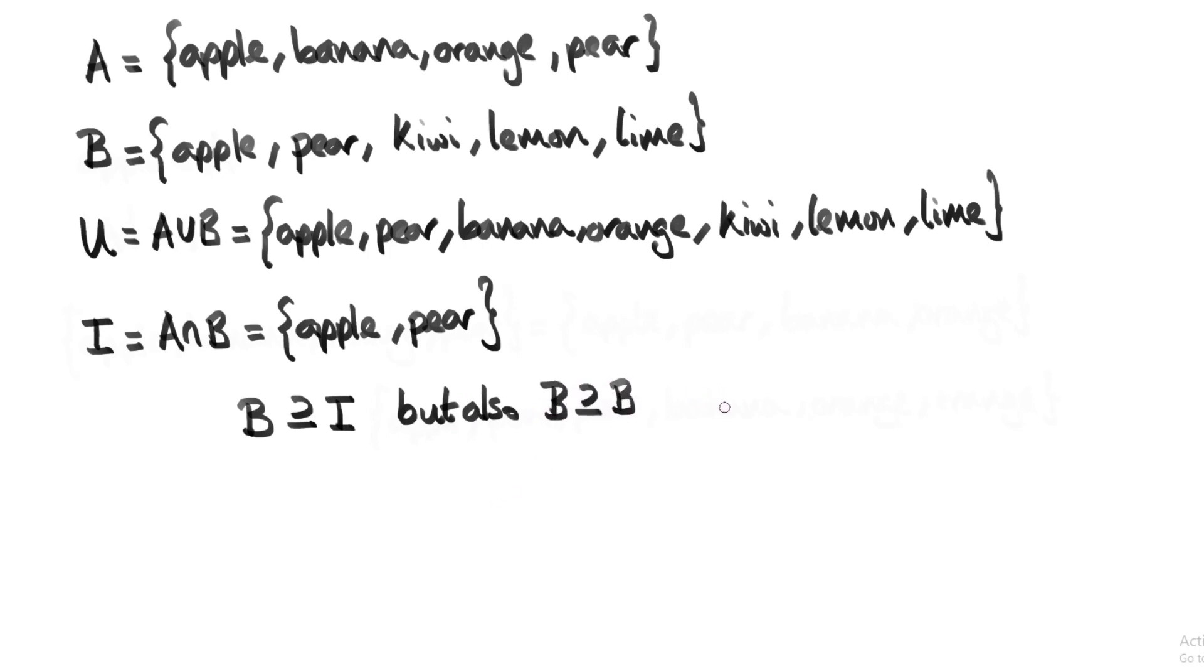There is a better way to describe the relationship between I and B. We say that I is a strict subset of B if every element in I is contained in B, but also that the size of I is smaller than the size of B. That's true, so I is a strict subset of B.